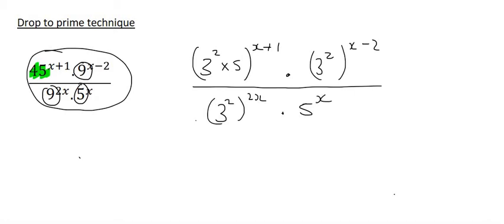The next step is going to be to do the simple exponent rules. And so we look at this 2 over here. And what do we do with that 2 and that x plus 1? Think about your exponent rules. You multiply. And so that's going to become 3 to the power of 2x plus 2.